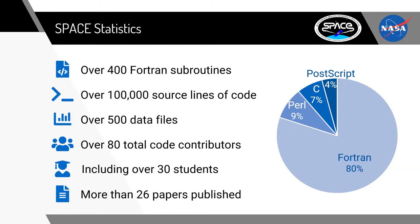When it comes to the program SPACE itself, we have hundreds of subroutines that are driven by our many data files. With three different spacecrafts that we're looking at at the moment, you can imagine that we have our own set of parameters defined within data files for each of these vehicles — information like solar cell properties, the length and resistances of wiring, and also what the spacecraft's geometry looks like so that we can know how the spacecraft shadows itself during a mission. All of this work has been performed over the past three decades by over 80 total code contributors, and we've published more than 26 papers.